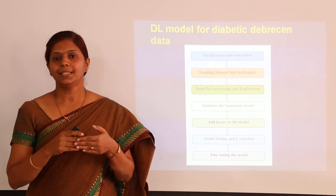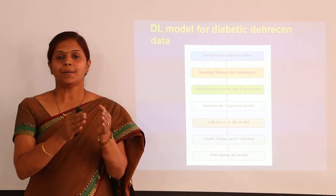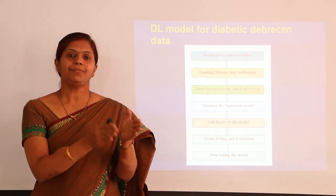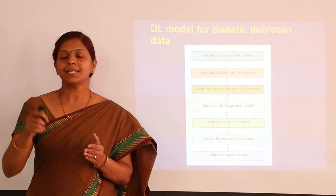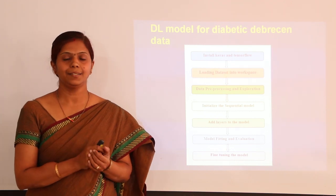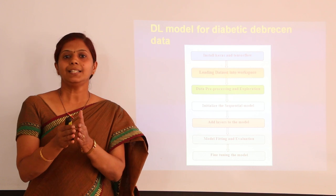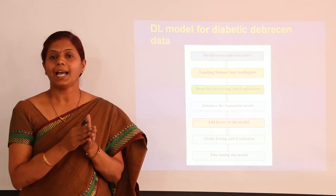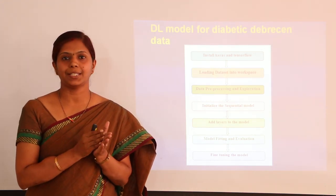Once pre-processing is done, the model is built through initialization of a sequential model. The number of hidden layers are added, with the ReLU rectifier activation function for the hidden layers and the Softmax activation function for the target layer. The model is then compiled with categorical cross-entropy for the loss and accuracy as the performance metric.